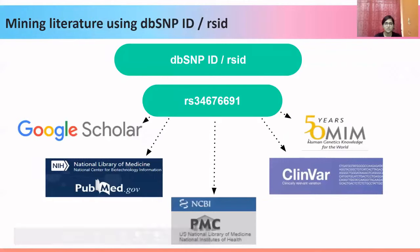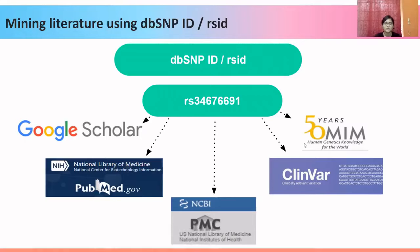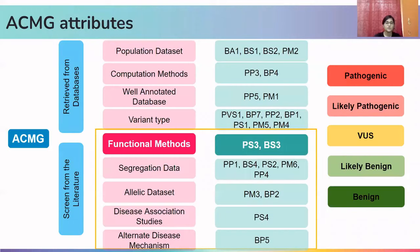The last step is to mine using the RSID in Google Scholar, PubMed, PMC, ClinVar, and OMIM. ClinVar and OMIM provide accurate searching with the help of RSID, so we use only RSID for those databases. After all this searching, what are we looking for in these publications?